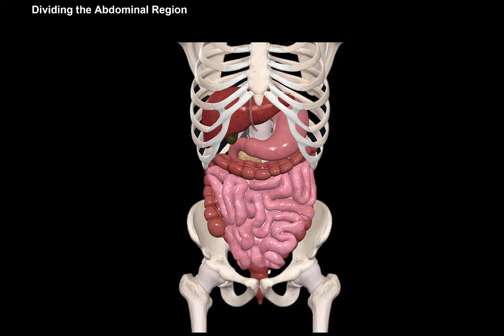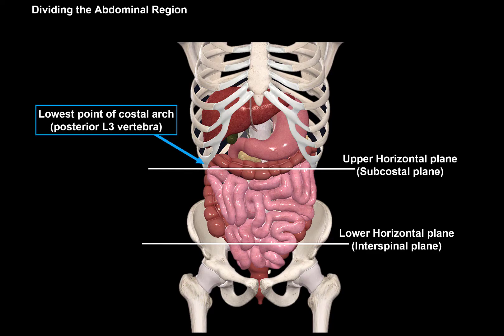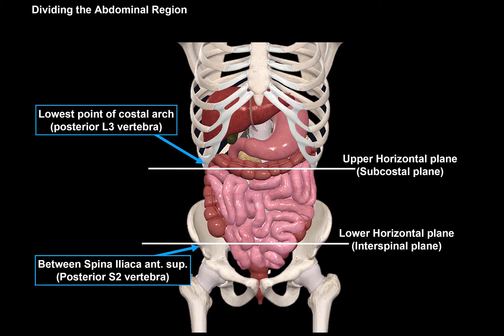Let's start by dividing the abdominal region into two horizontal lines. We call these the upper horizontal plane and the lower horizontal plane. The upper horizontal plane is at the lowest point of the costal arch, and is therefore also called the subcostal plane. While the lower horizontal plane is between the spina iliaca anterior superior, so it is sometimes also called the interspinal plane.